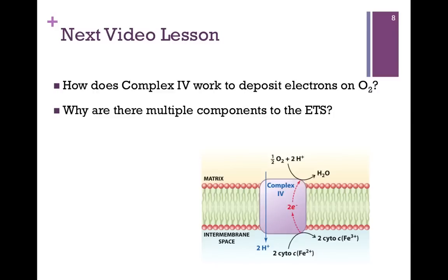In our next video lesson, we're going to look at Complex 4 and see how it works to take electrons from cytochrome C and pass them to our terminal acceptor, O2. And we'll start to look at why there are multiple components to this electron transport system.